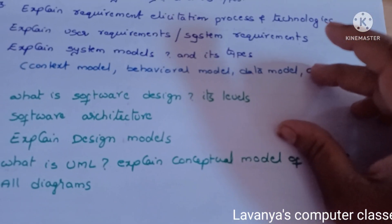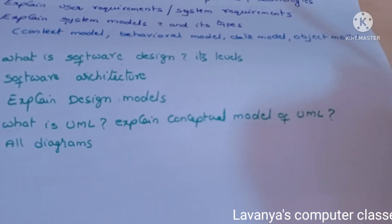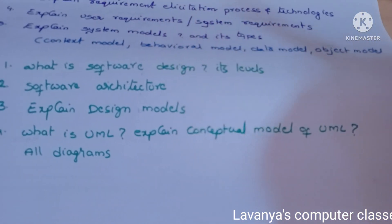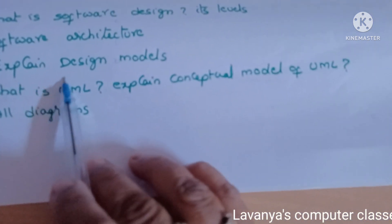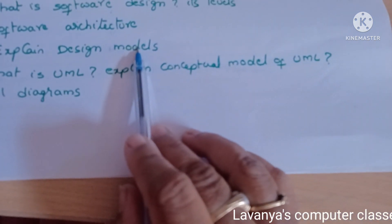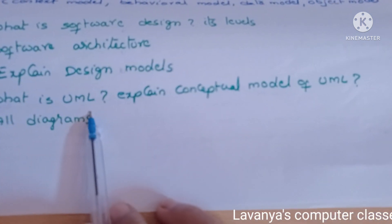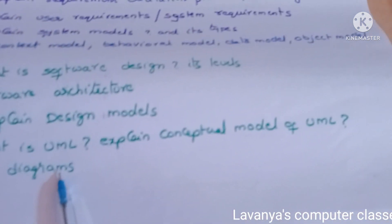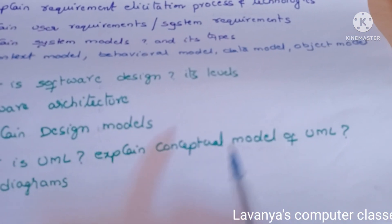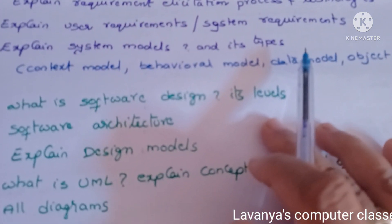Unit three: The questions are what is software design and explain its levels. A very important question is explain about software architecture. Next is explain design models — there are many design models. And what is UML? Explain the conceptual model of UML and all diagrams. You have to learn all the diagrams — use case diagrams, sequence diagrams, everything.